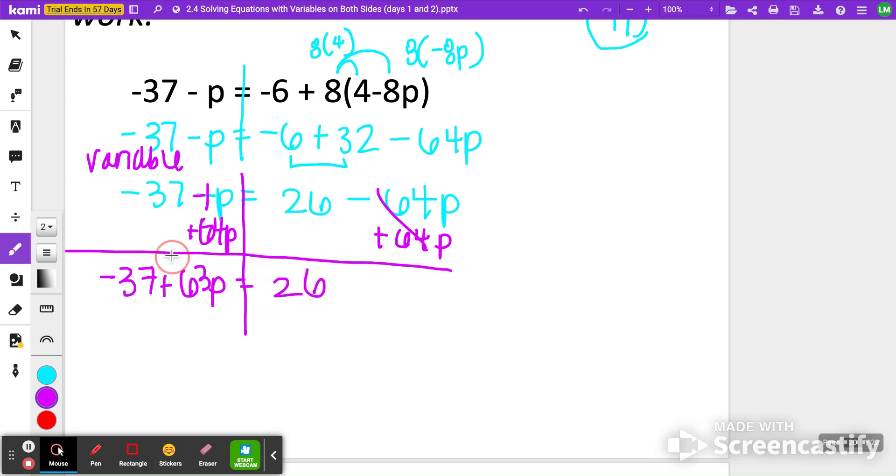Notice how this, because this 63 made a positive, I put a plus sign in front of it. Then I'm going to move this negative 37 over by adding 37 to both sides. Negative and positive 37 cancels out. So 63p is all that's left.